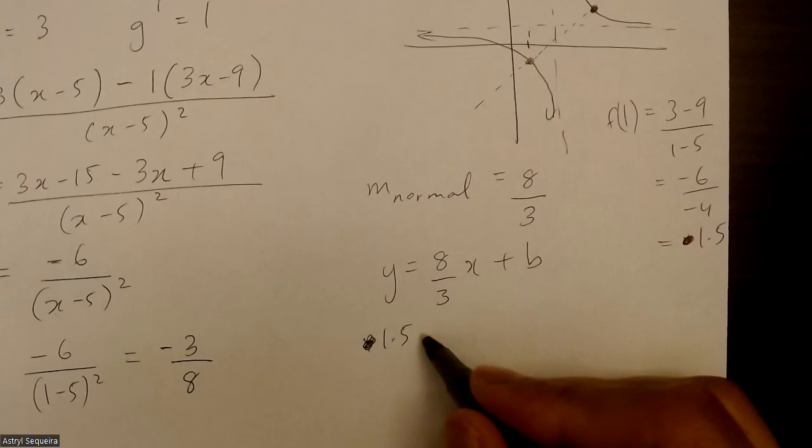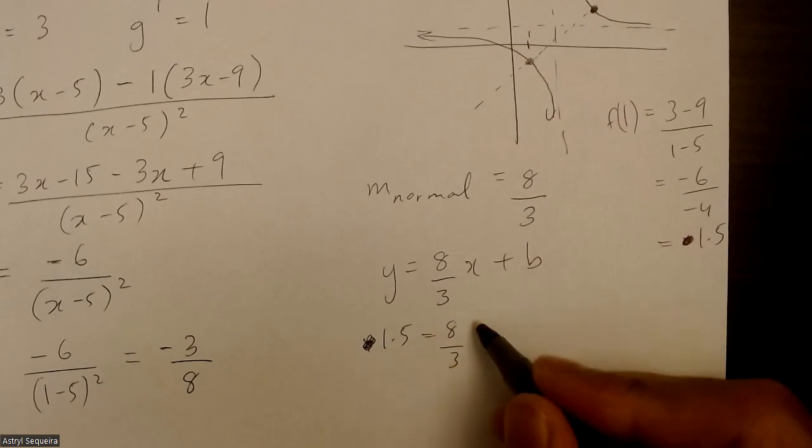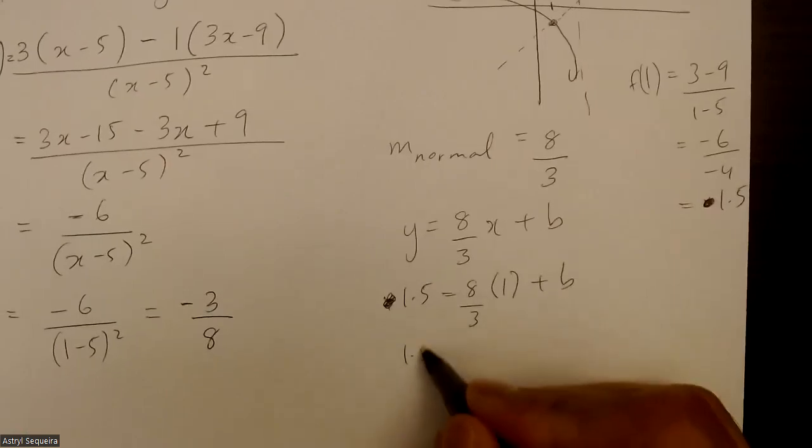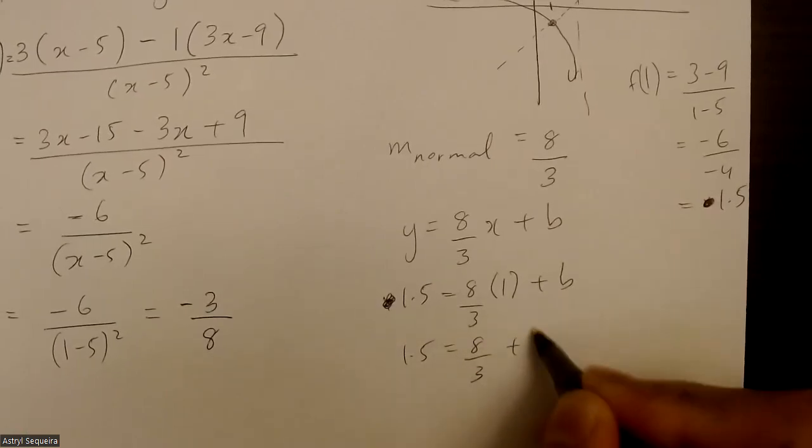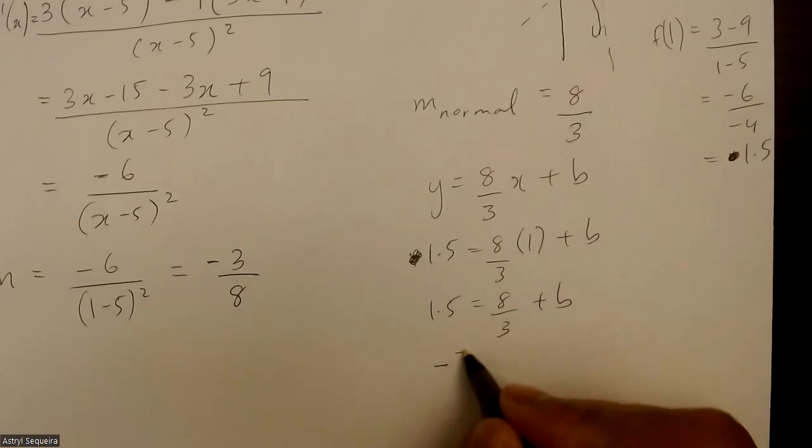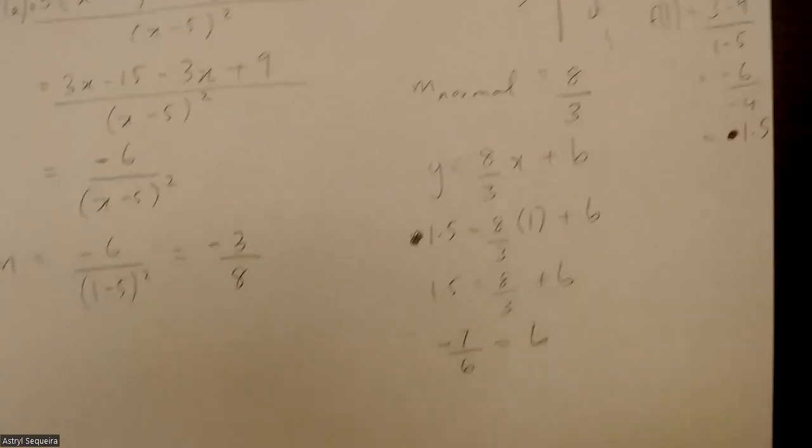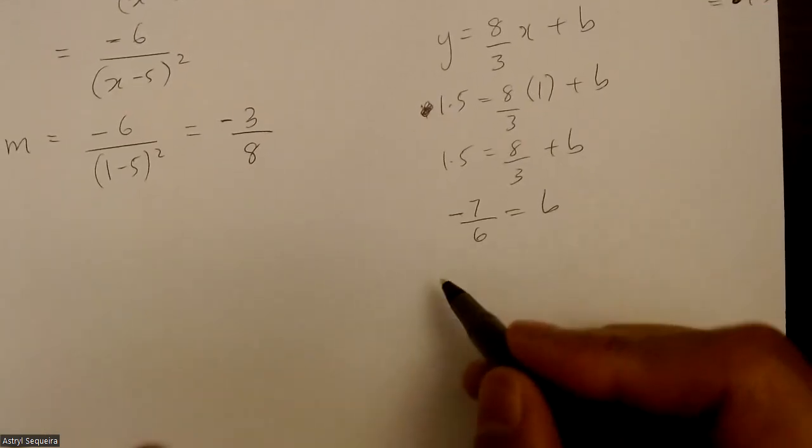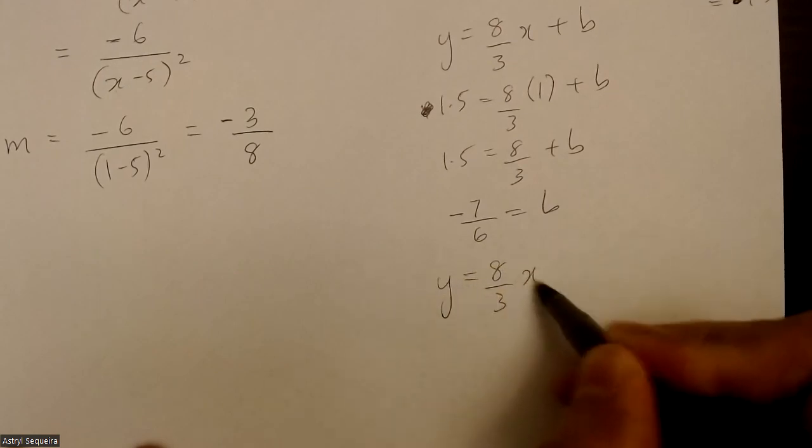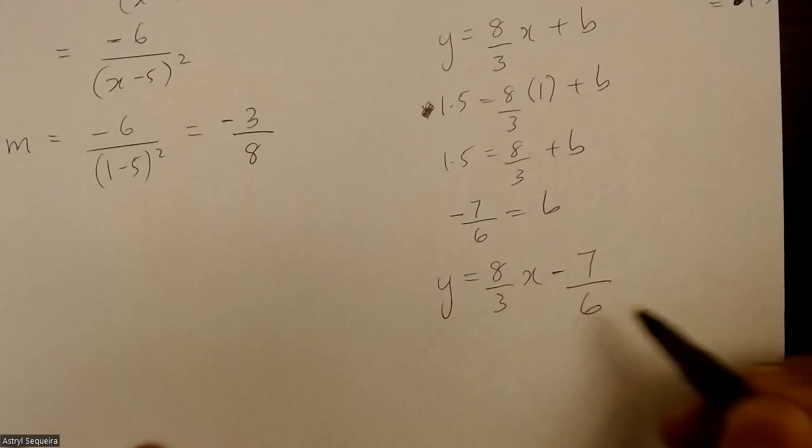So 1.5 equals 8 over 3. My x value is just 1 plus b. So 1.5 equals to 8 over 3 plus b. And then I'll subtract this on this side. 1.5 minus 8 over 3 is just negative 7 over 6. So my equation for my normal line is y equals to 8 over 3x minus 7 over 6.